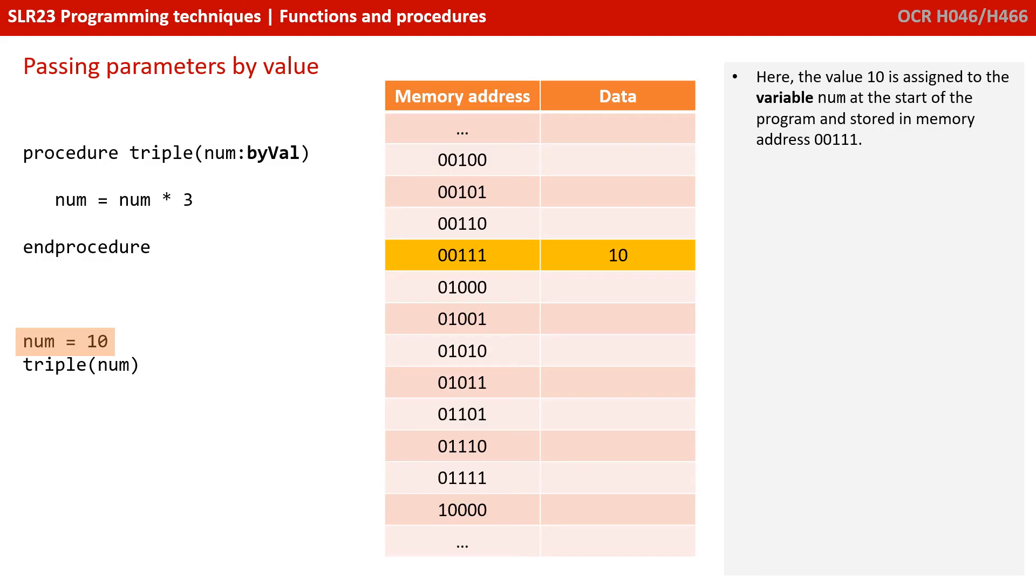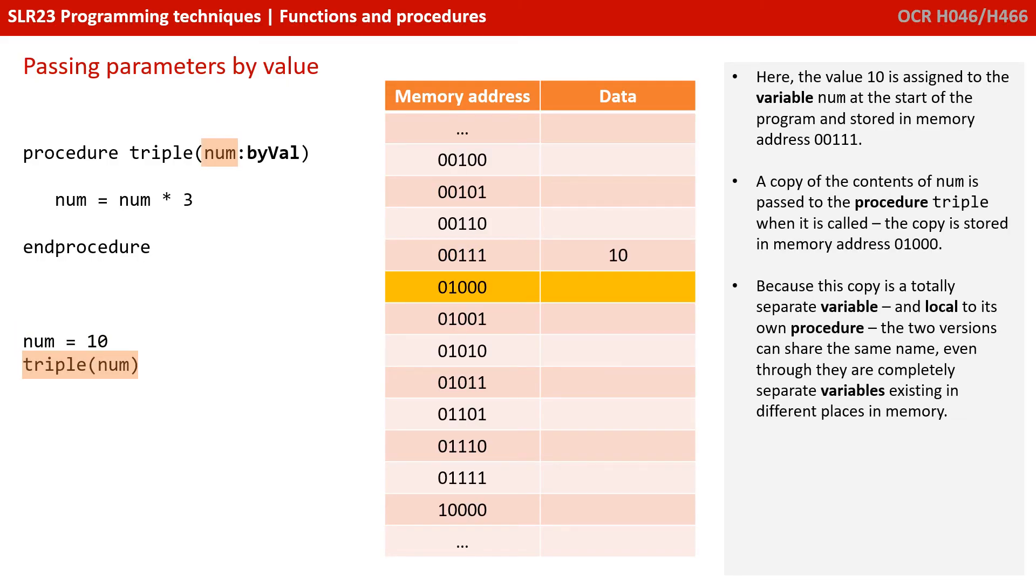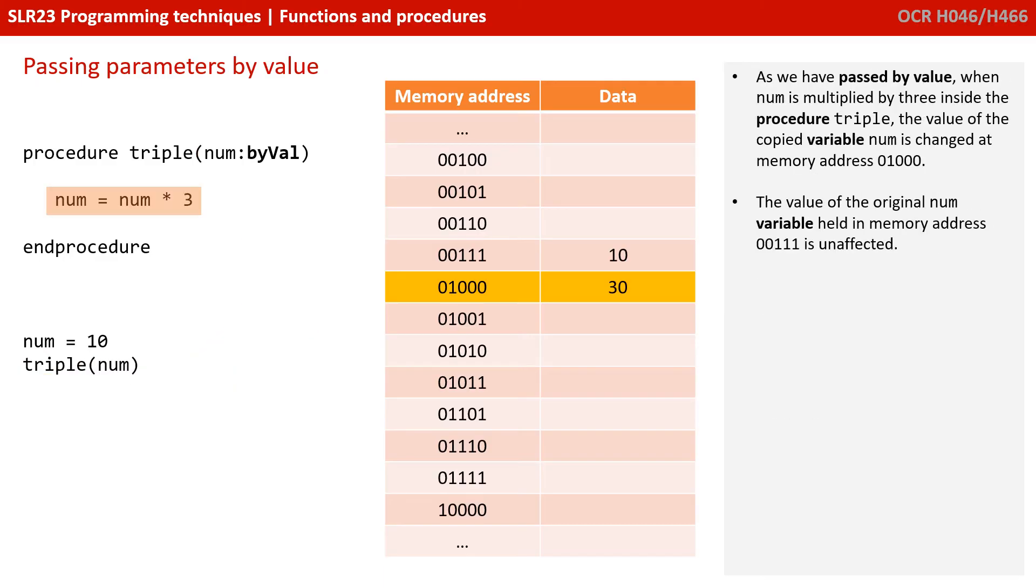Here, the value 10 is assigned to the variable num at the start of the program and stored in address 00111. A copy of the contents of num is passed to the procedure triple when it's called, and the copy is stored in memory address 01000. Because this copy is a totally separate variable and local to its own procedure triple, the two versions can share the same name, even though they're completely separate variables existing in different places in memory. As we've passed by value, when num is multiplied by 3 inside the procedure triple, the value of the copied variable num is changed at memory address 01000. The value of the original num variable held in address 00111 is unaffected.